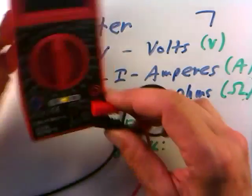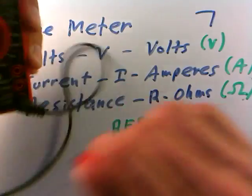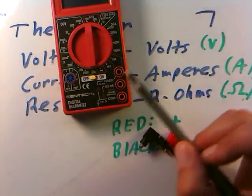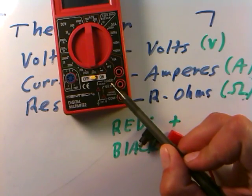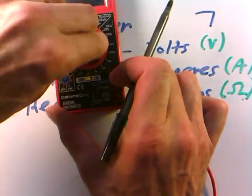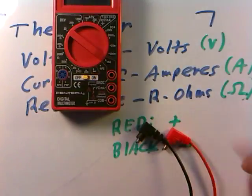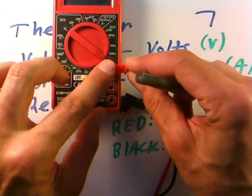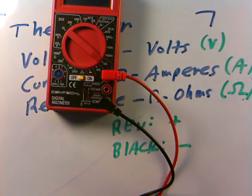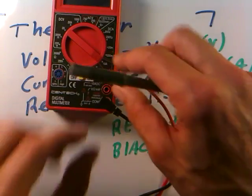Now if you look at what the two leads are plugged into here, the red and black leads, you can see that there's three holes on the meter. One is labeled 10 Amps DC. This is a very large current scale, so you would plug the red lead into this jack, and the black one into the common, and you'd be able to measure DC currents up to about 10 Amps. If you exceed 10 Amps, you'll blow the fuse inside the meter.